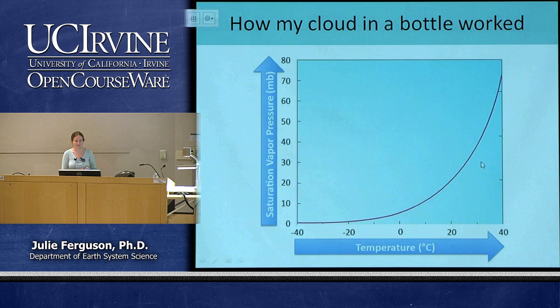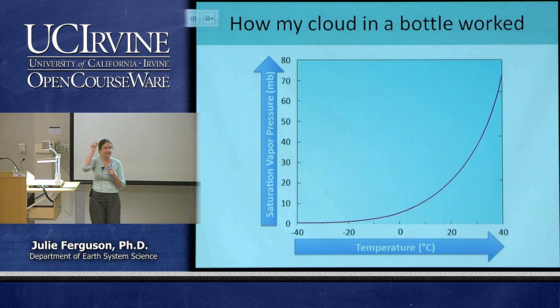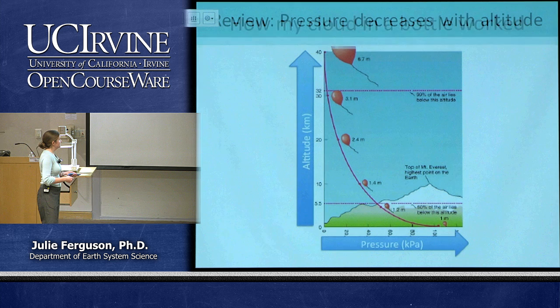All I did was change the temperature by releasing the pressure. We decreased in pressure, moved straight down on our diagram, and hit the saturation line — that red line. At that point you could see it: it started condensing out, forming droplets. We created our cloud.